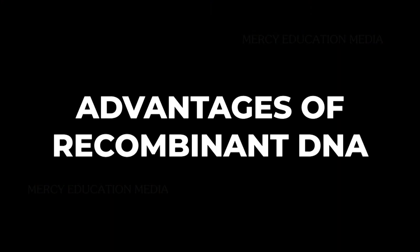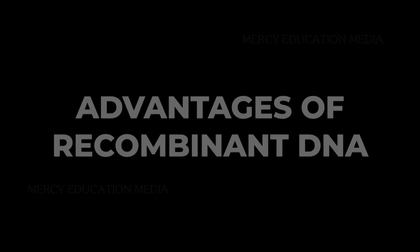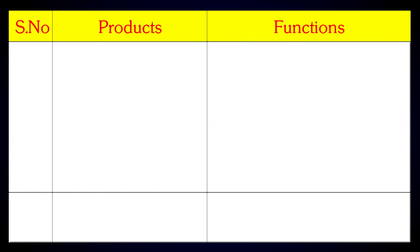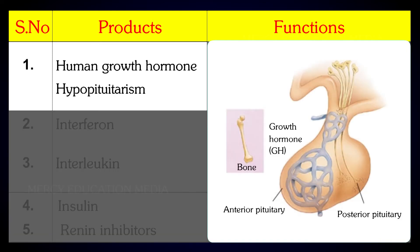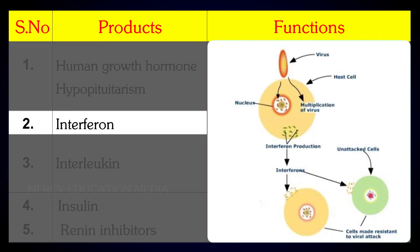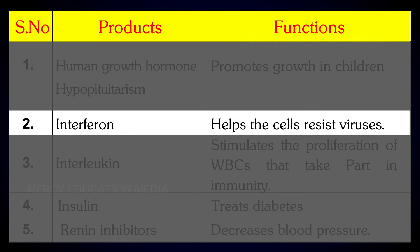Among the advantages of recombinant DNA, a sample of therapeutic drugs presently manufactured through recombinant DNA is found in the table given below. Some genetically engineered products include the human growth hormone, which treats hypopituitarism and promotes growth in children, and interferon, which helps cells resist viruses.